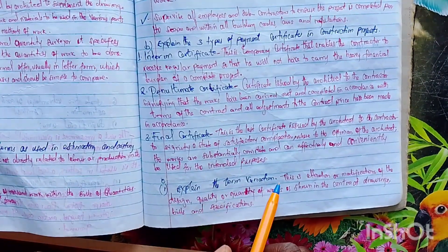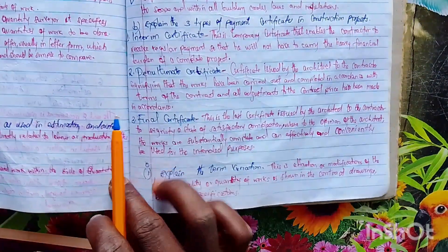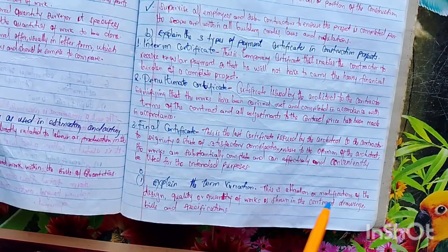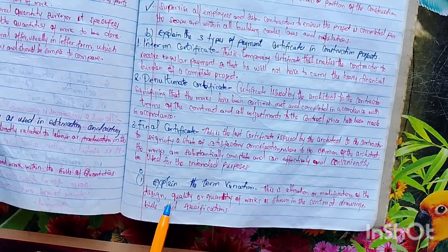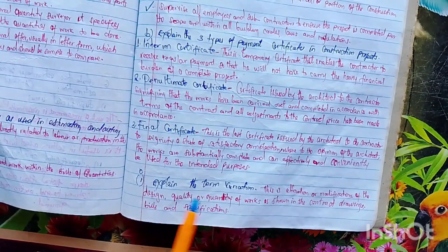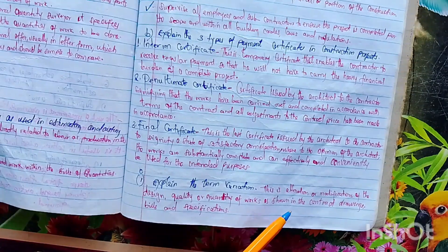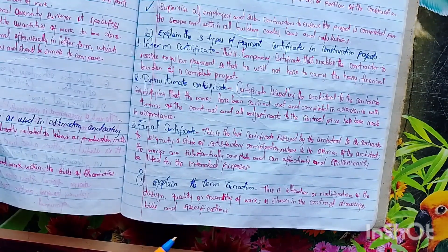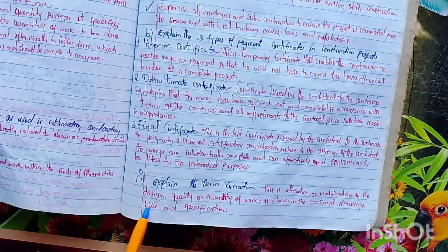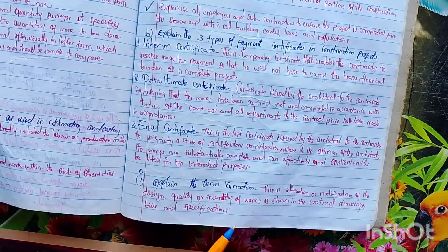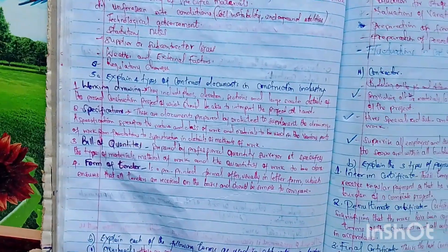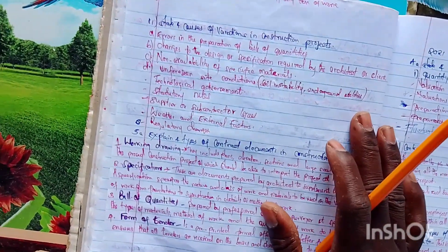The next question: explain the term 'variation.' Variation is the alteration or modification of the design, quality, or quantity of works as shown in the contract drawing, bills, and specification.